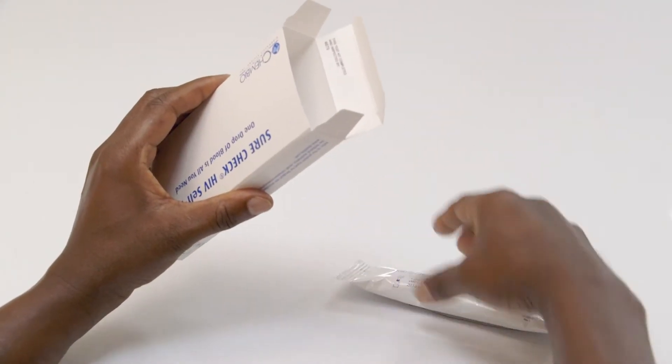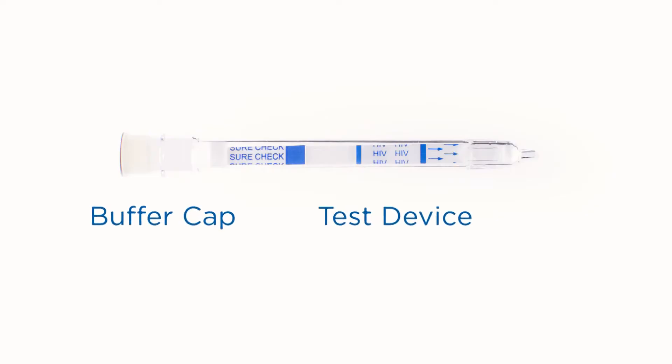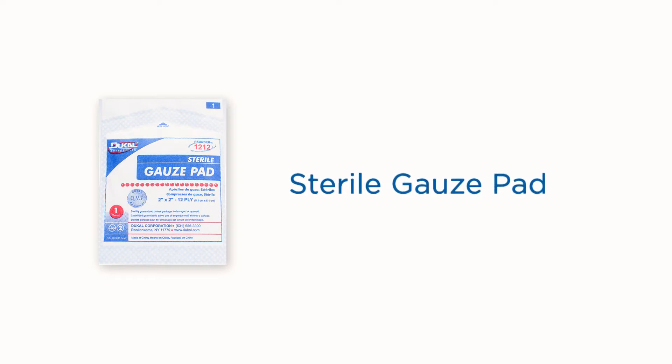The SureCheck HIV self-test contains the buffer cap and test device, bandage, safety lancet, test stand, sterile gauze pad, and alcohol swab.